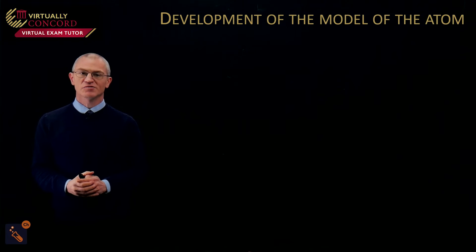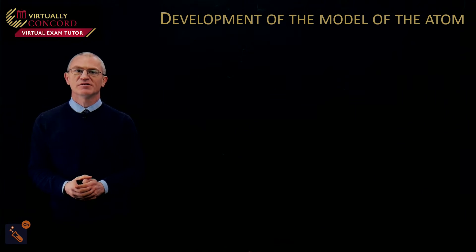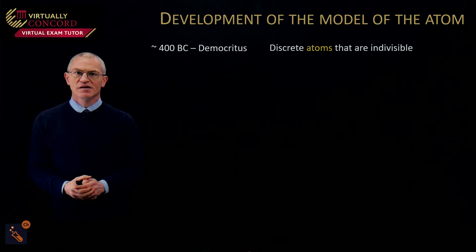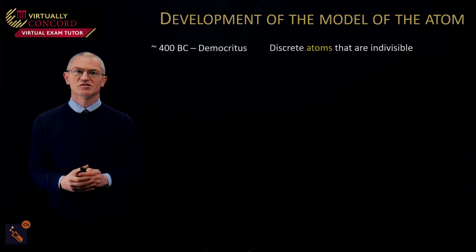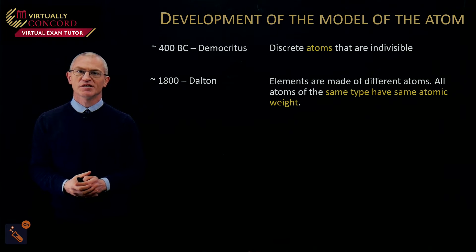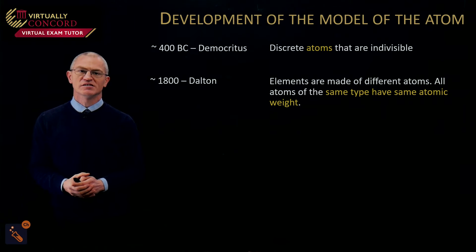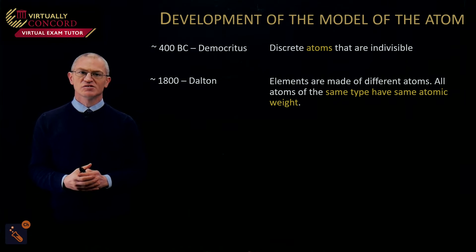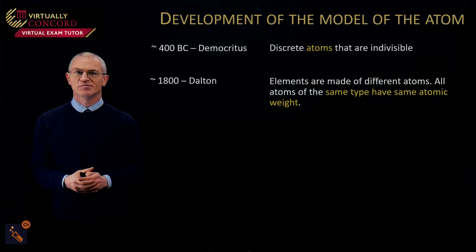The first thing we're going to talk about is the development of the model of the atom. Around 400 BC, Democritus thought that atoms were indivisible. Then nothing much happened until we got to Dalton around 1800, who said that atoms of the same type have the same atomic weight.